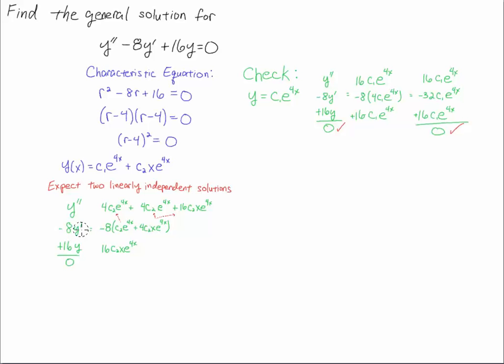The minus 8 stays here with this y prime because that's this term, not this term. The coefficient in front of the y double prime is 1. This term requires another product rule, so I get 4c2e to the 4x plus, and then 4 drops down, I get 16c2x e to the 4x.